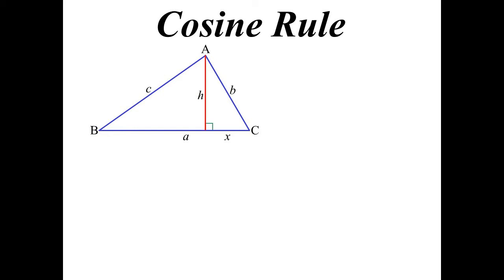So the cosine rule then. I'm going to drop the perpendicular down to create the cosine rule. I'm going to call that little bit there X. I could use Pythagoras. H squared would equal B squared minus X squared.